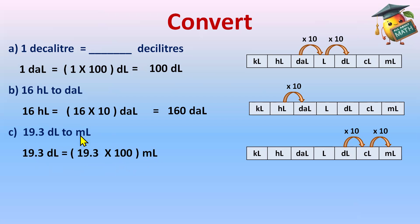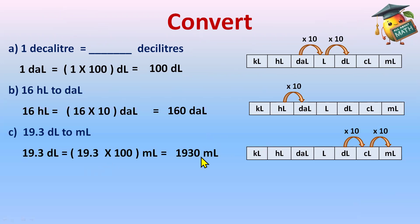While converting decimals, we need to know how decimals are multiplied by 10, 100, and 1000 — I'll share a link in the description. Here we are multiplying by 100, so the decimal shifts two places to the right. There is only one decimal place, so add one zero. 19.3 × 100 gives 1930 — so the answer is 1930 milliliters.